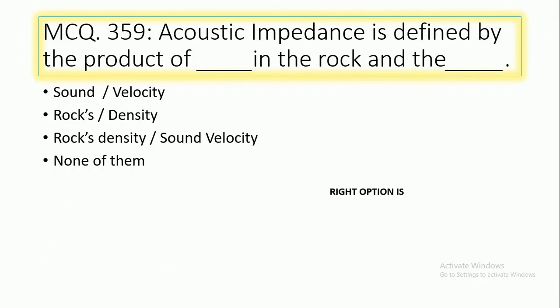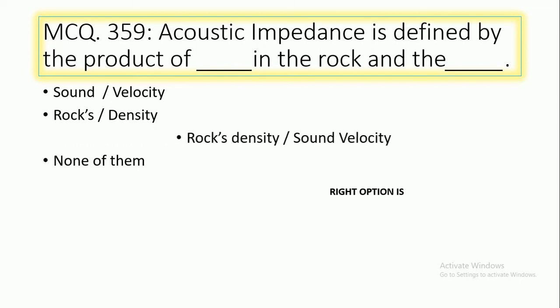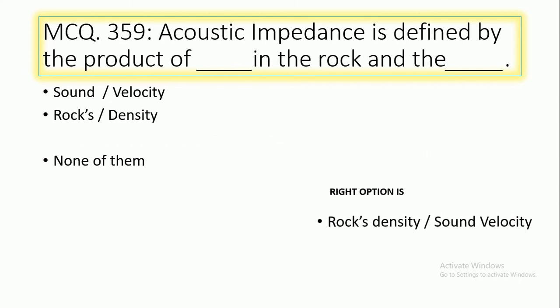MCQ number 359: Acoustic impedance is defined by the product of rock density, rock density and sound velocity, or none of them. The right option is option number 3: acoustic impedance is defined by the product of rock density and sound velocity.